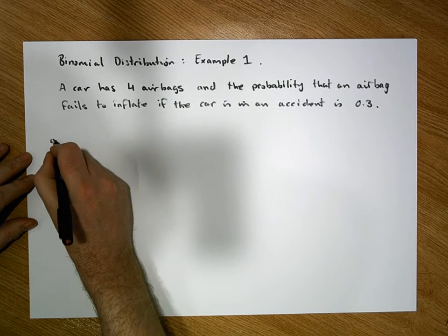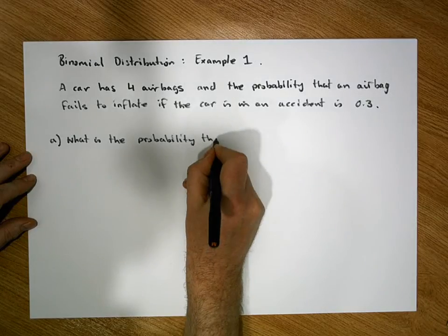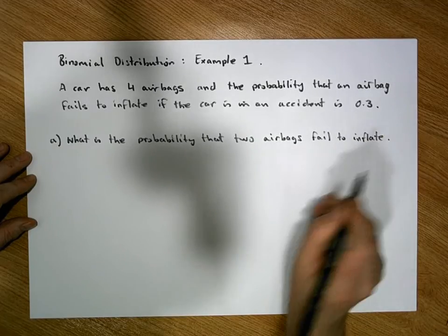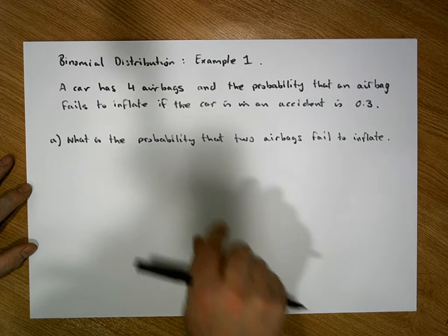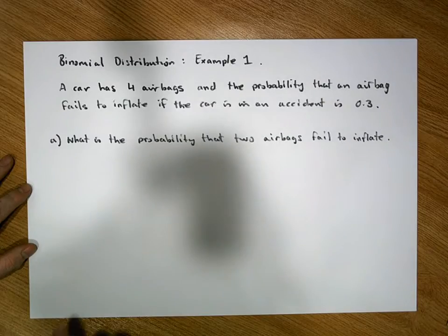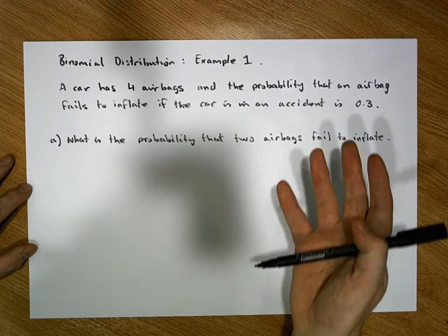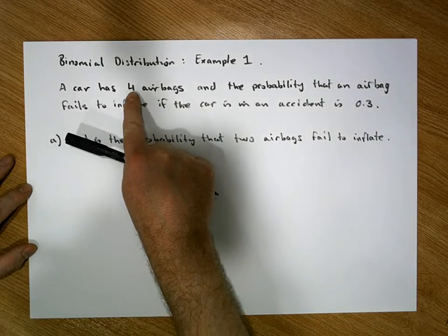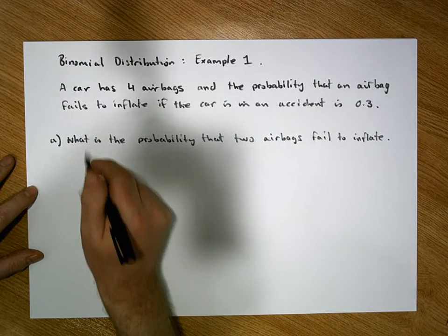Part A: I want to find out what is the probability that two airbags fail to inflate if the car is in an accident. This is a binomial distribution problem dealing with four objects — the airbags in the car. We've been given the characteristics of any one airbag, and one of two things can happen: the airbag can either fail to inflate or inflate.